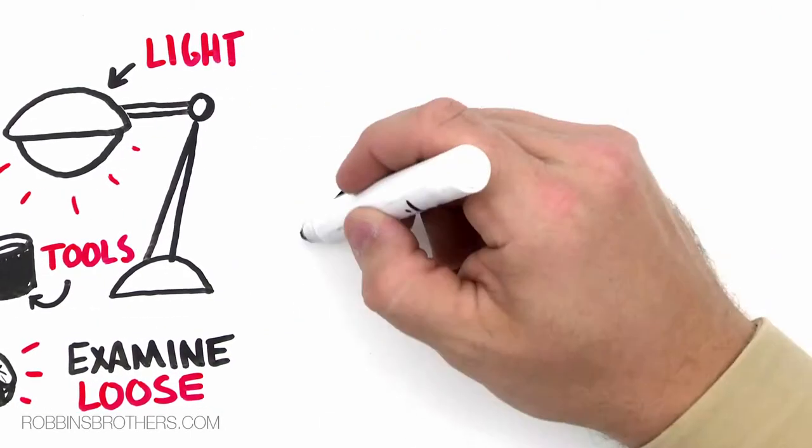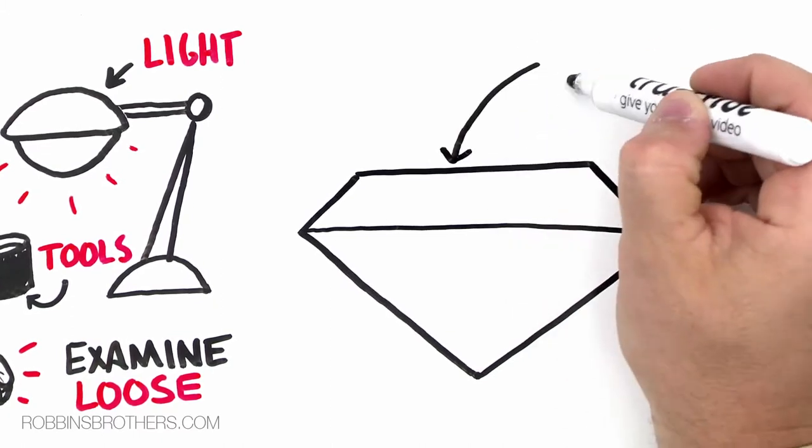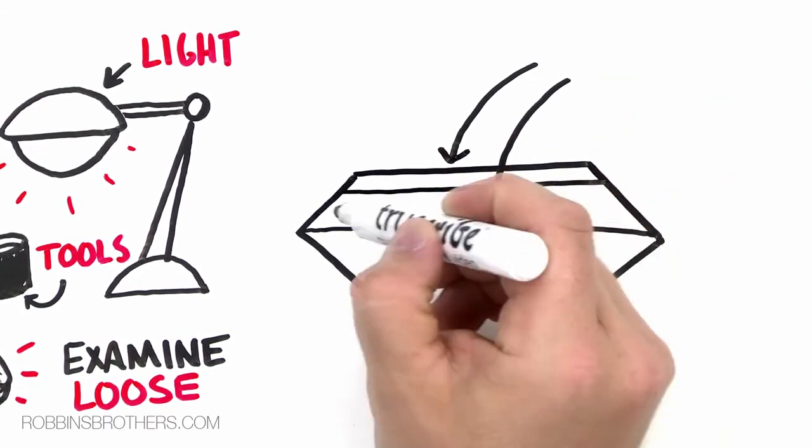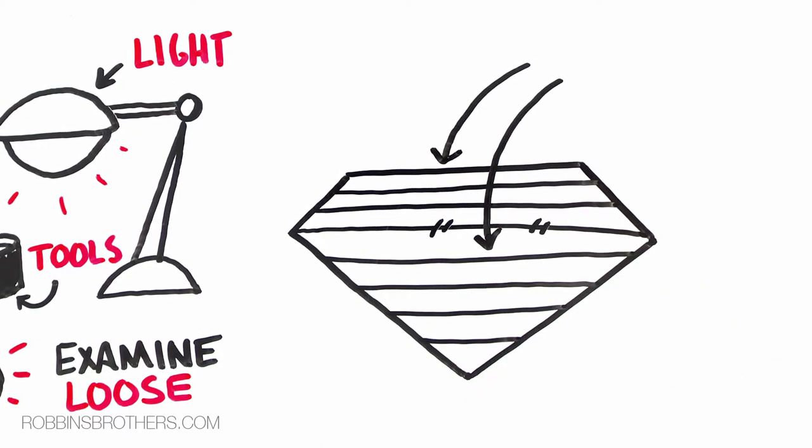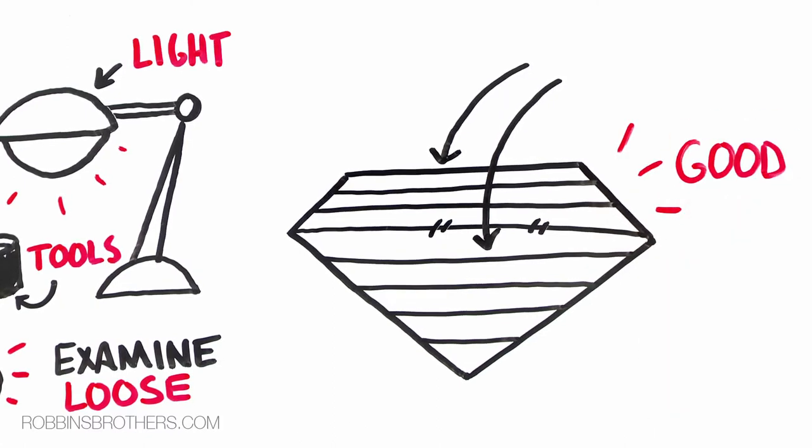Don't simply concentrate on the top of the diamond. You need to look at the diamond layer by layer and delve deep into the interior of that diamond so you can identify where all of the characteristics are that make that diamond unique, good and bad.